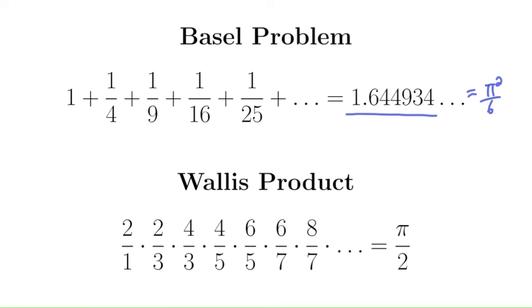But he was able to show this using his sine factorization, and we'll see this in a minute. And another really cool thing that just follows immediately from the sine factorization is this — this is called the Wallis product.